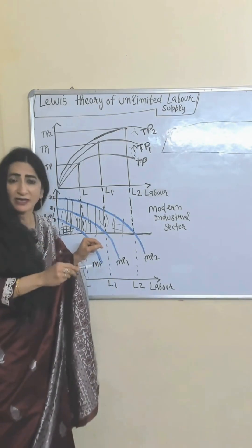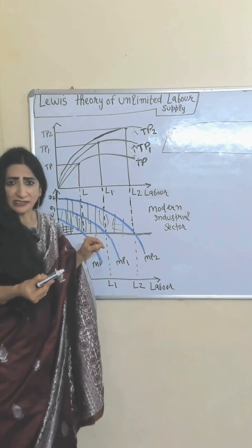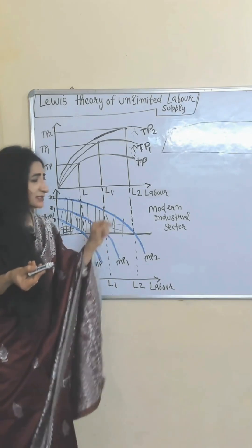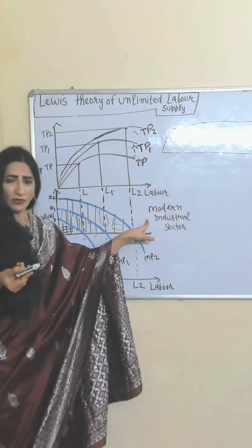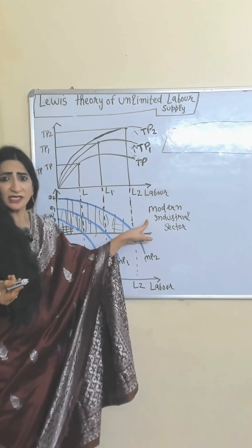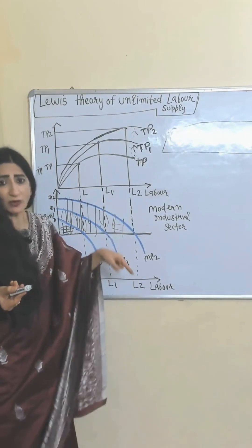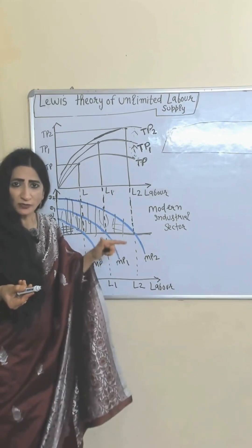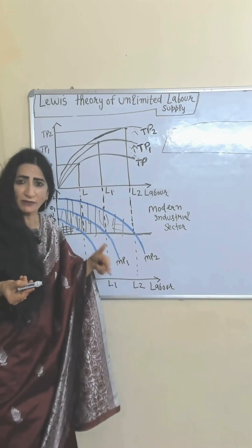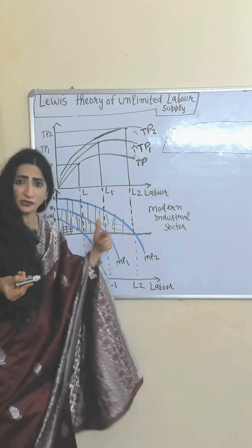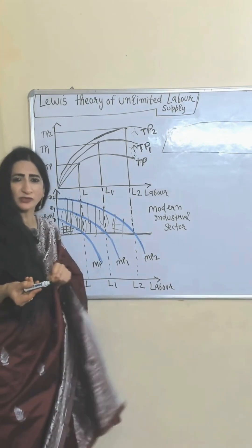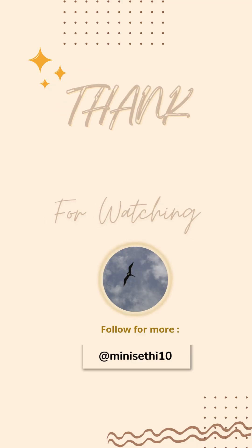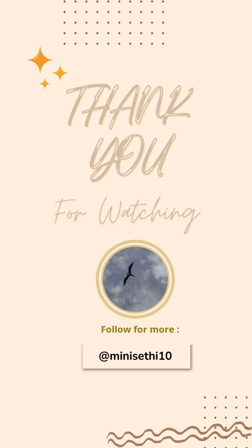But the process of growth will end soon when there is no more surplus labor in the agriculture sector. As a result, wages increase in the modern industrial sector, and as wages increase, the profit available for capital accumulation falls, and eventually the process of growth slows down.